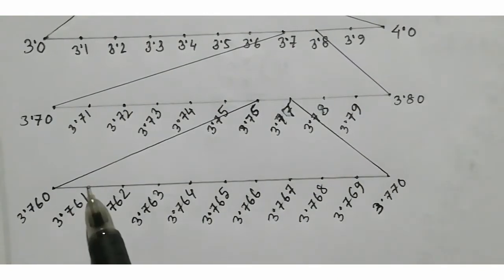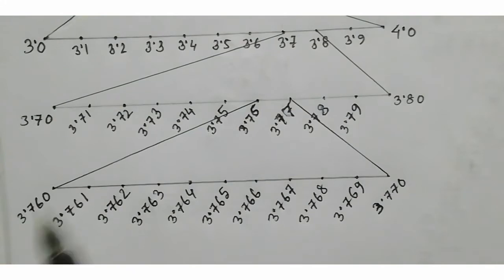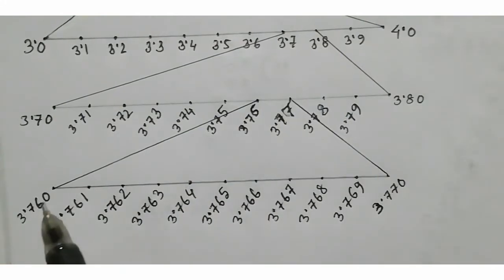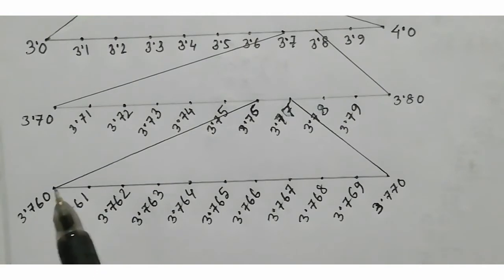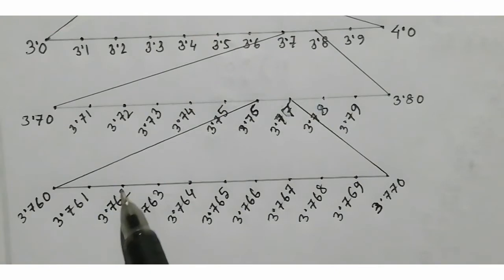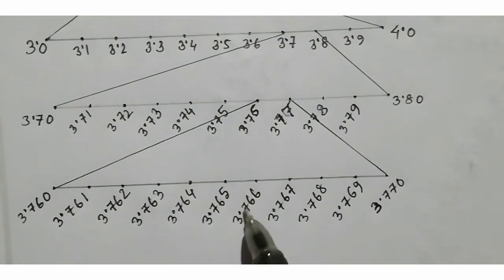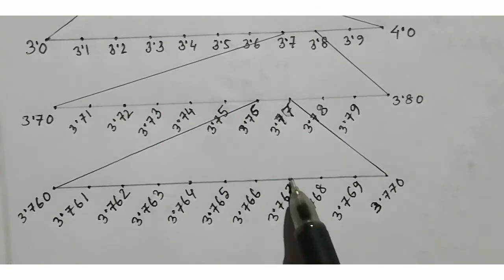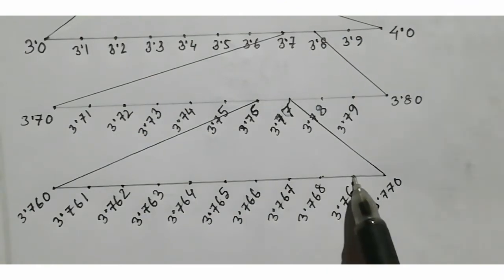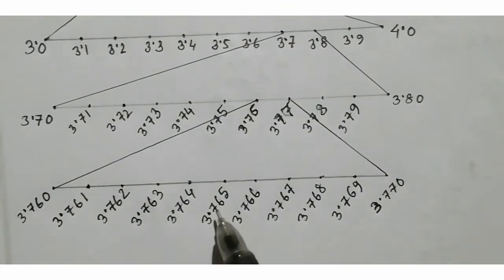Zooming further: 3.76, 3.77, 3.768, 3.769 — and the point is 3.765. 3.765 is placed at the exact point.